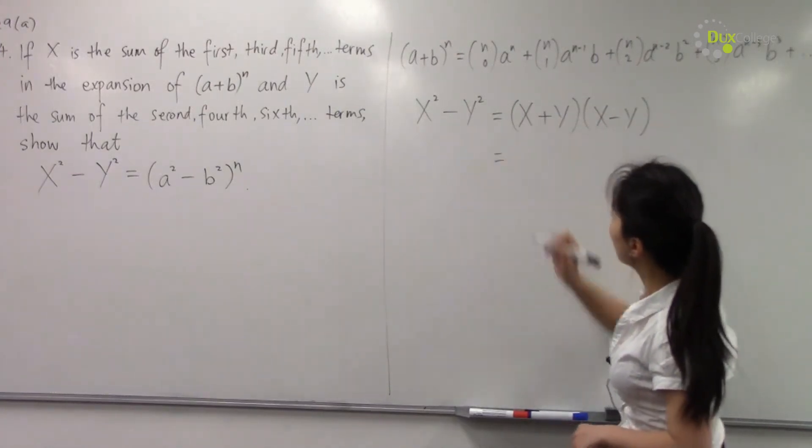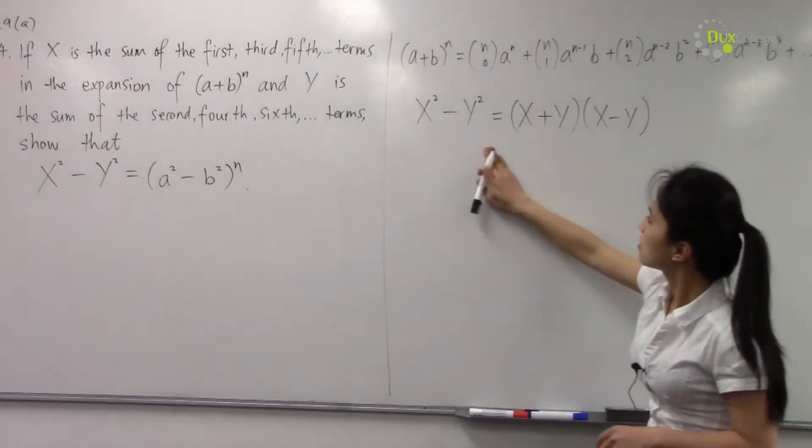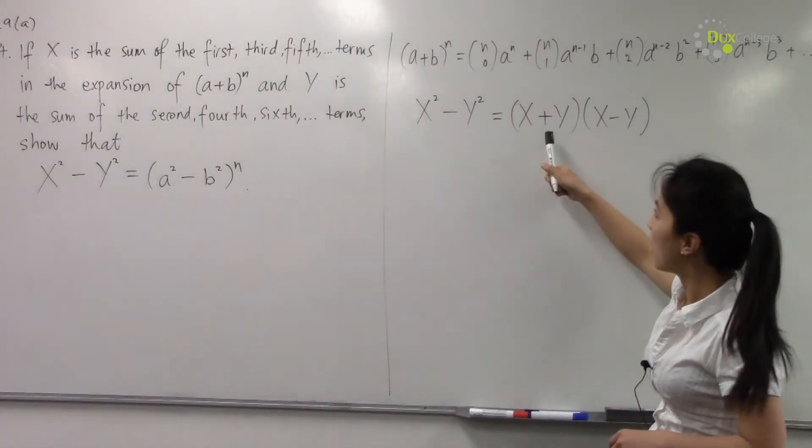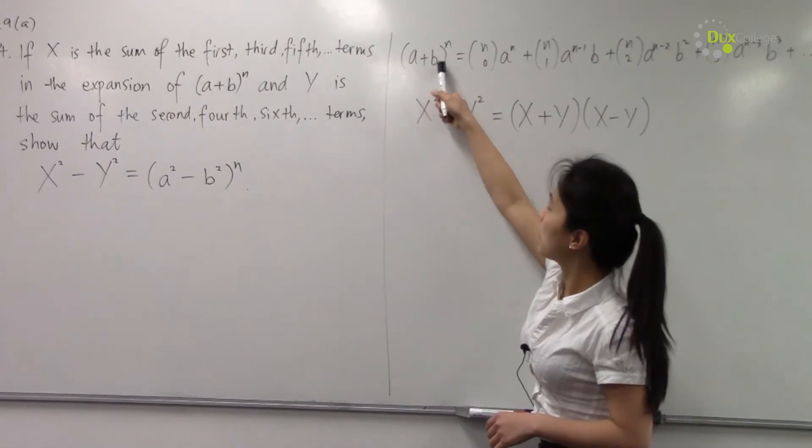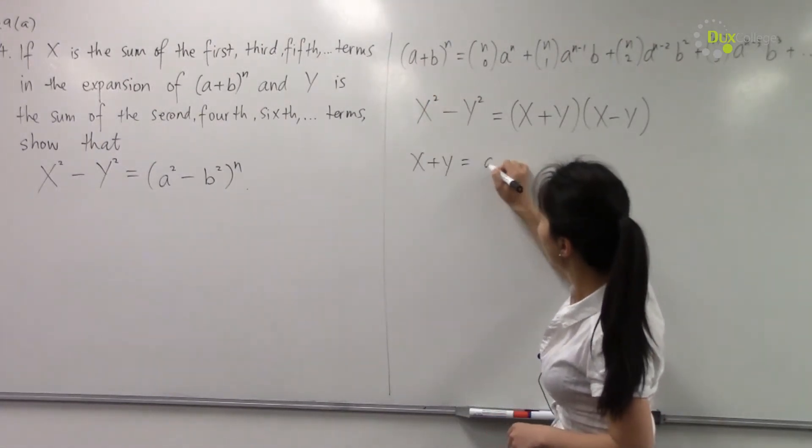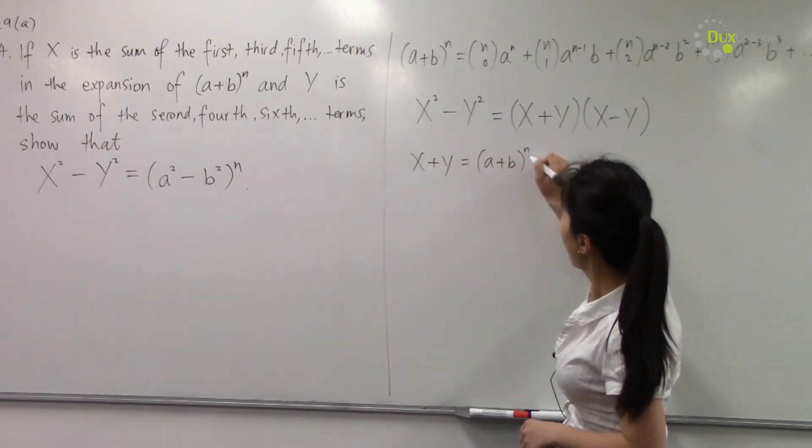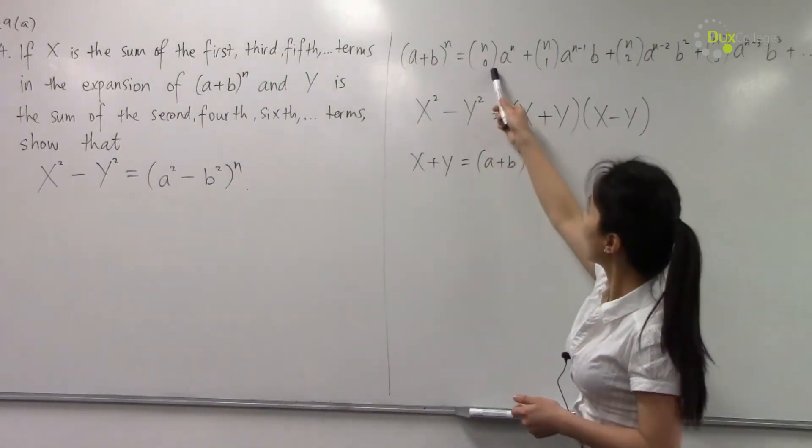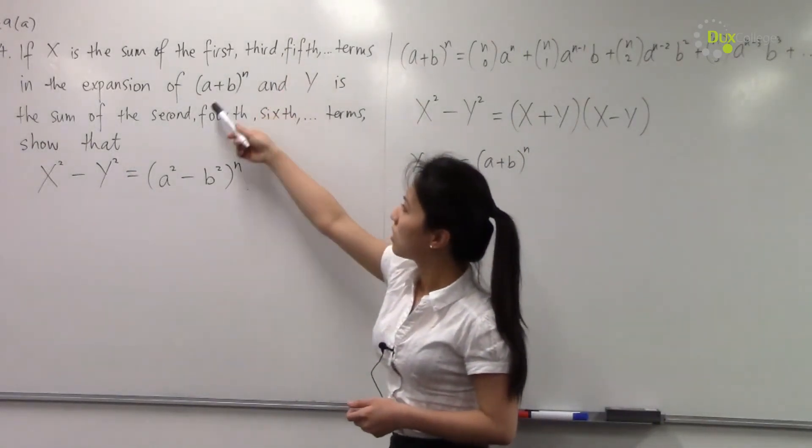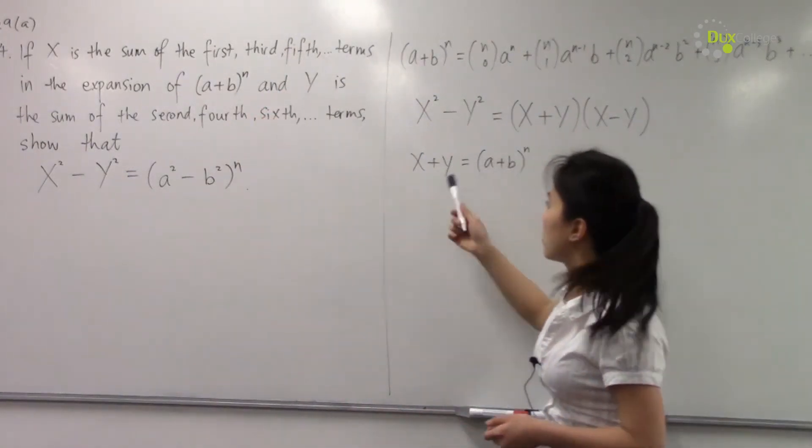After simplifying, X+Y equals (a+b)^n. So X+Y = (a+b)^n, which is the odd-numbered terms adding the even-numbered terms. That's X+Y.